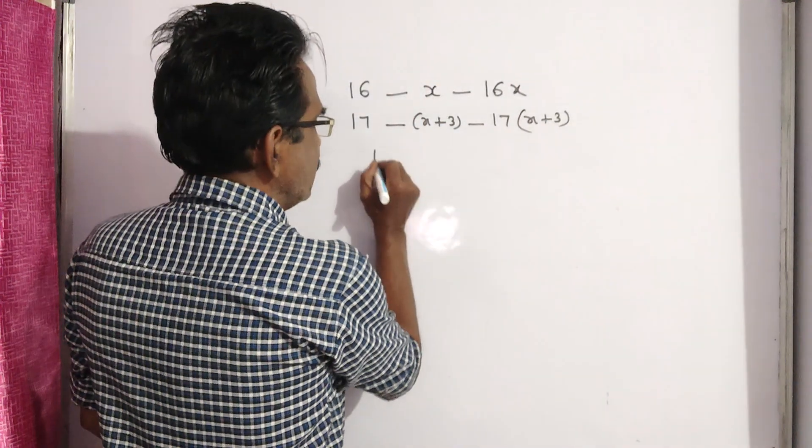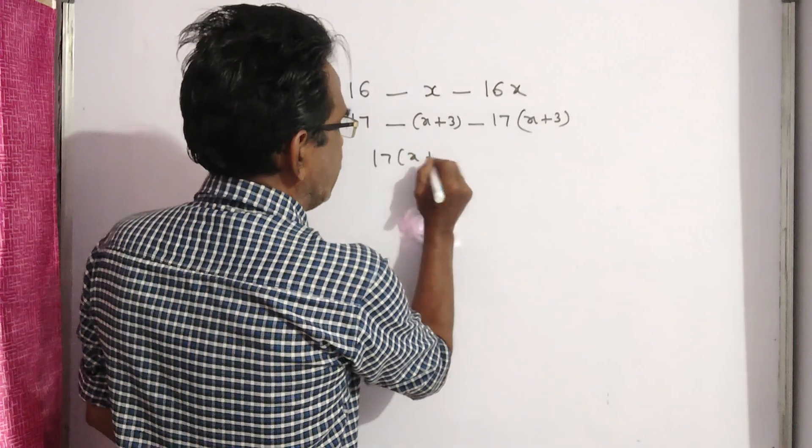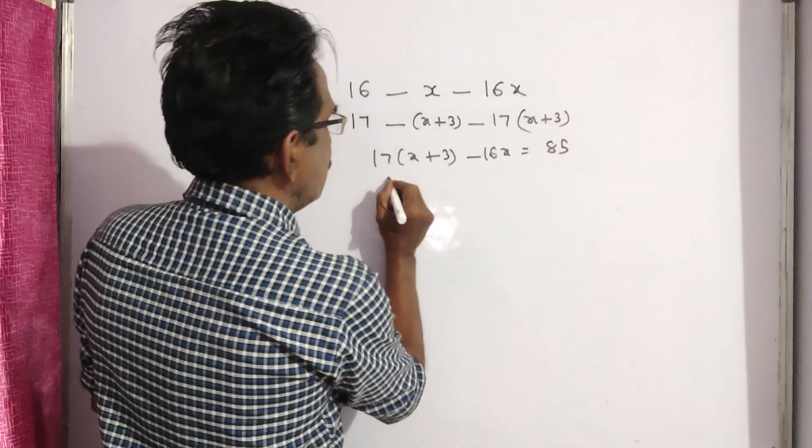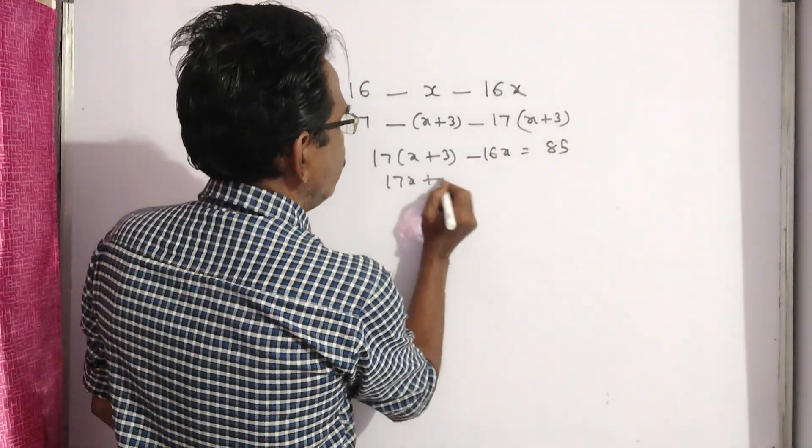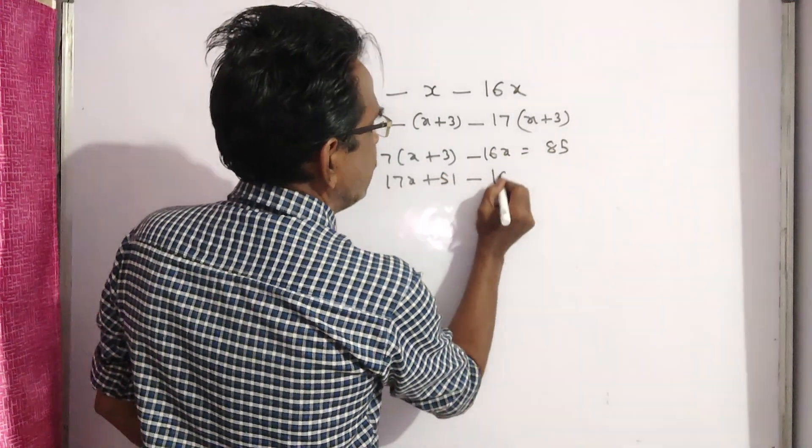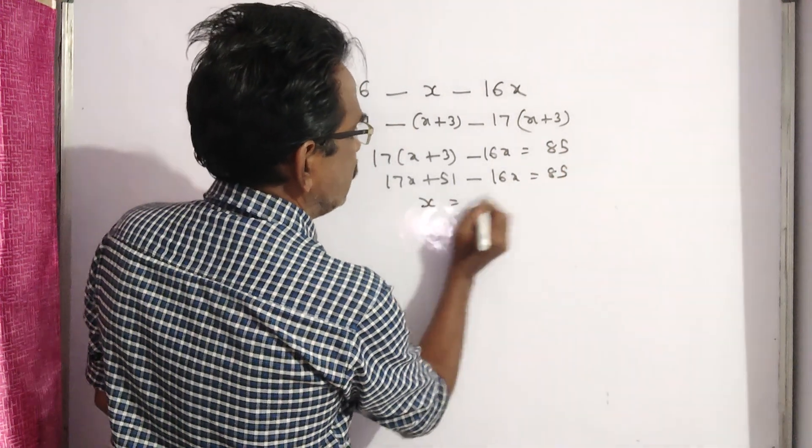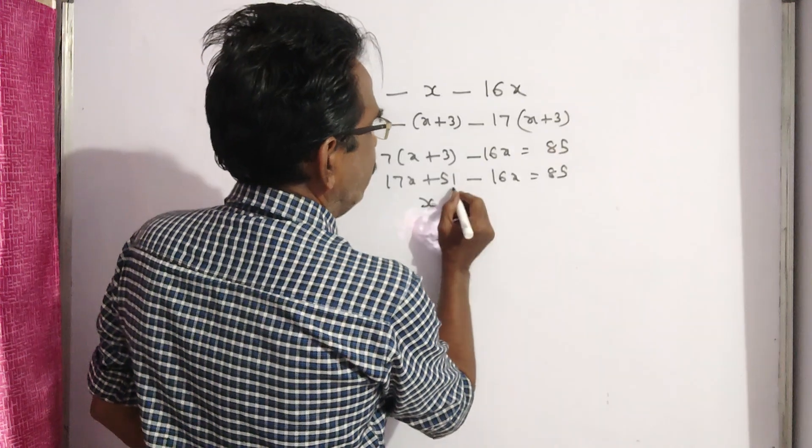17 into X plus 3 minus 16X equals 85. 17X plus 51 minus 16X equals 85. X equals 85 minus 51.